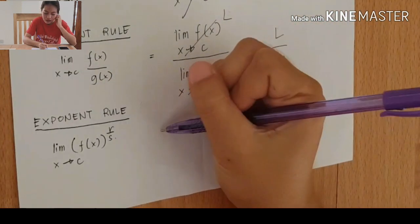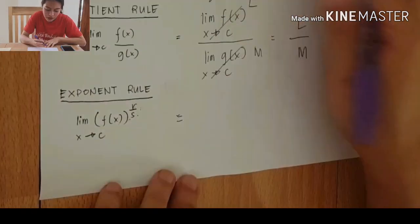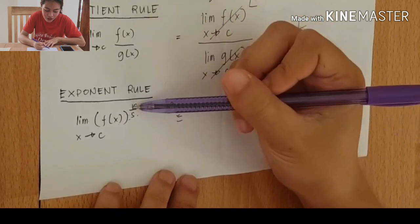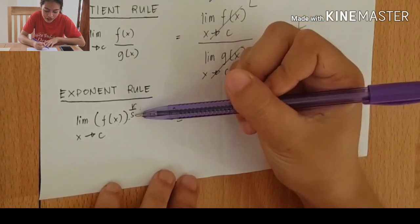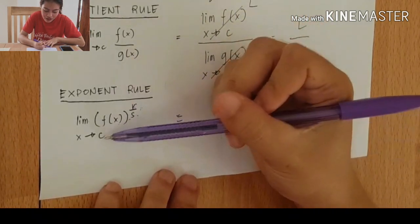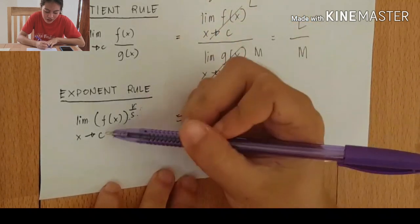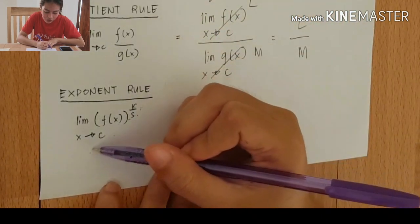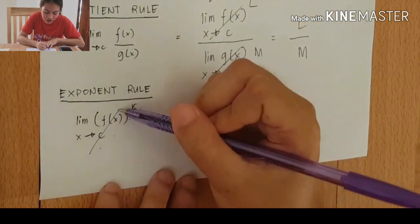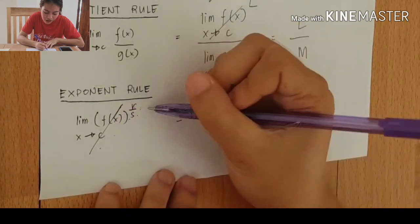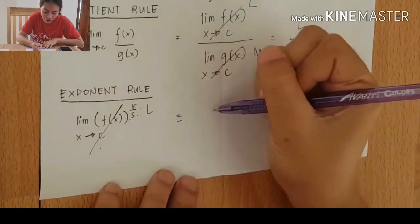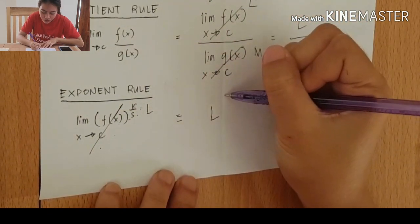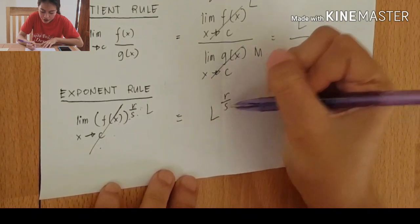The exponent rule states that the limit of f(x) raised to the r/s power as x approaches c, where the limit equals L, gives L raised to the r/s power.